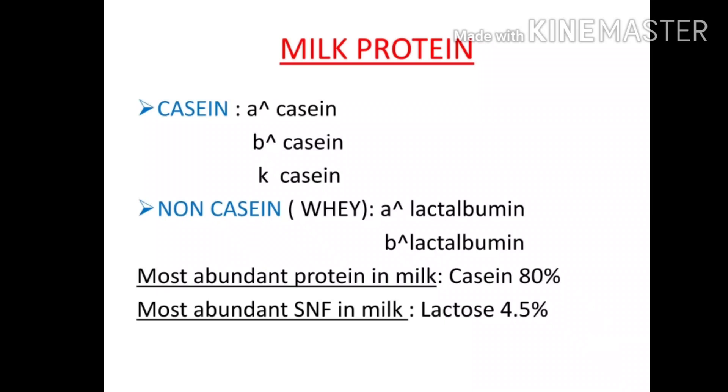Casein makes up 80% of milk protein. The most abundant component in SNF in milk is lactose, which is 4.5%.